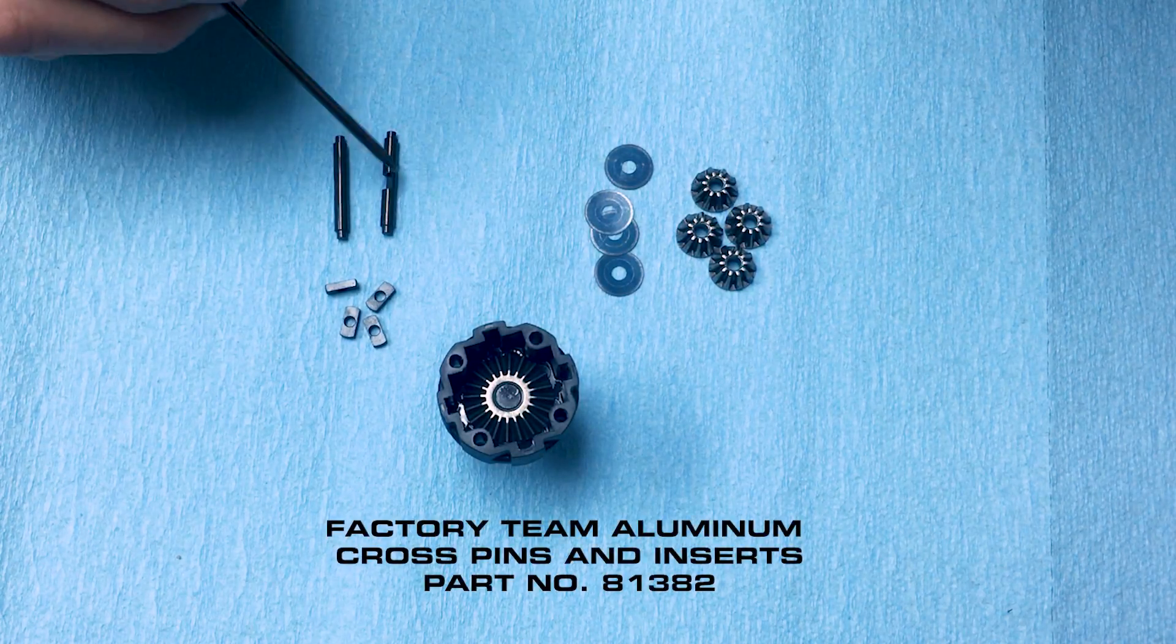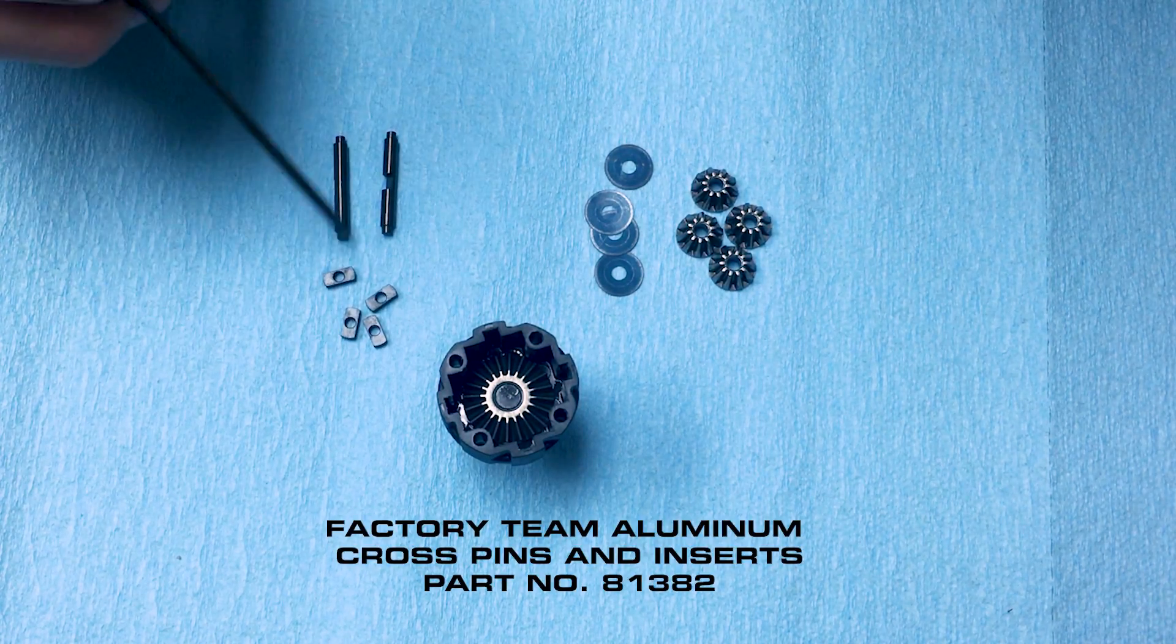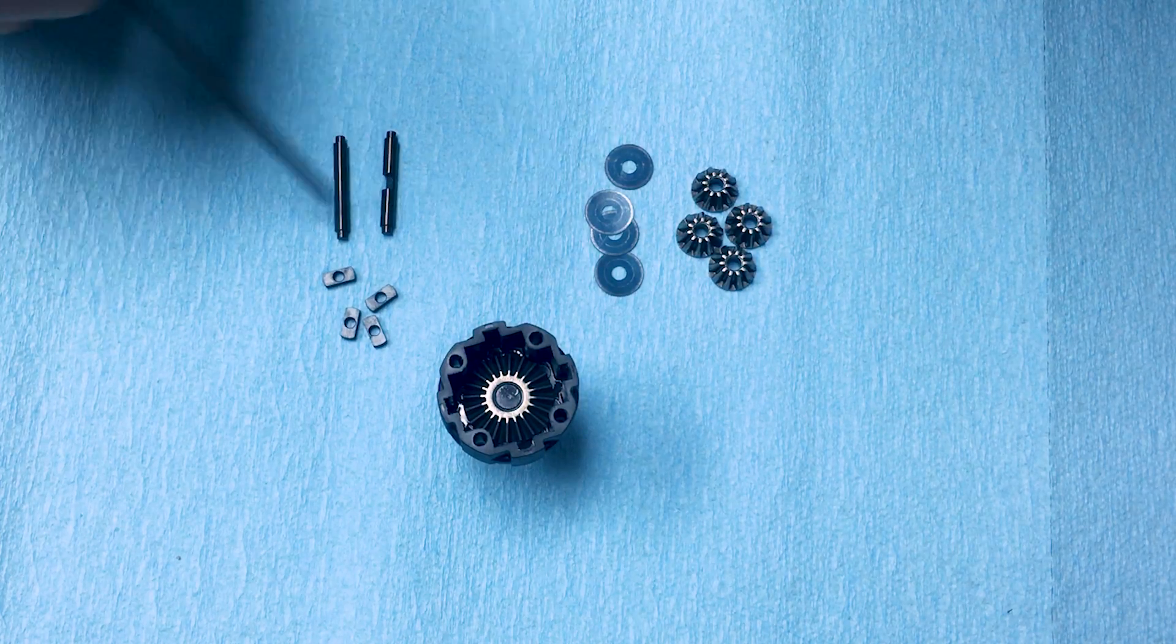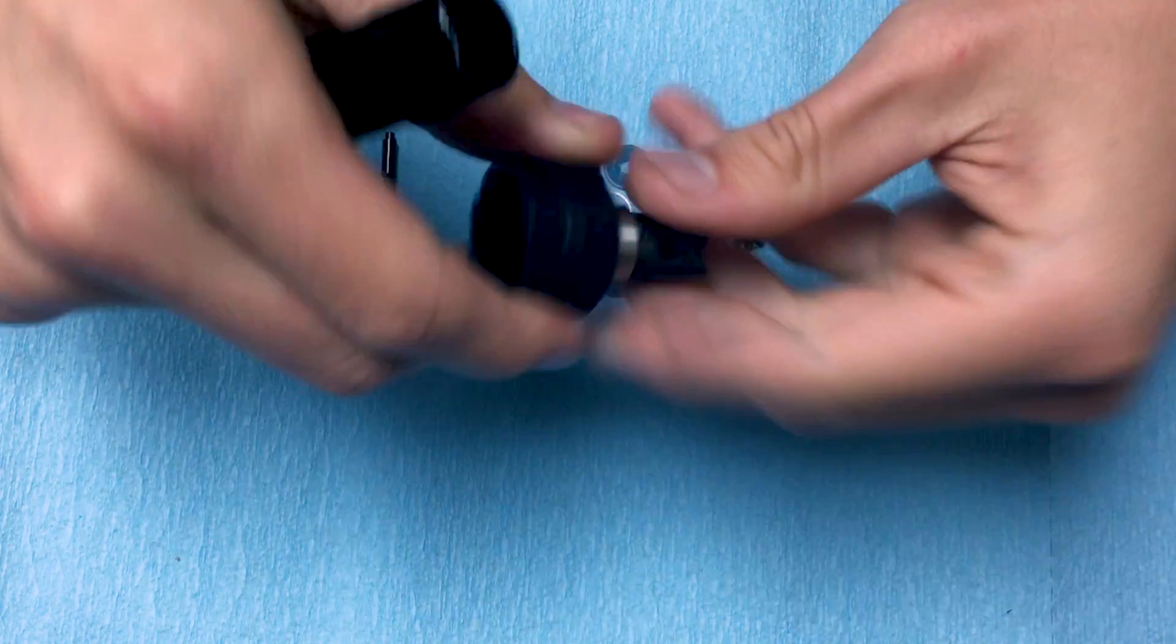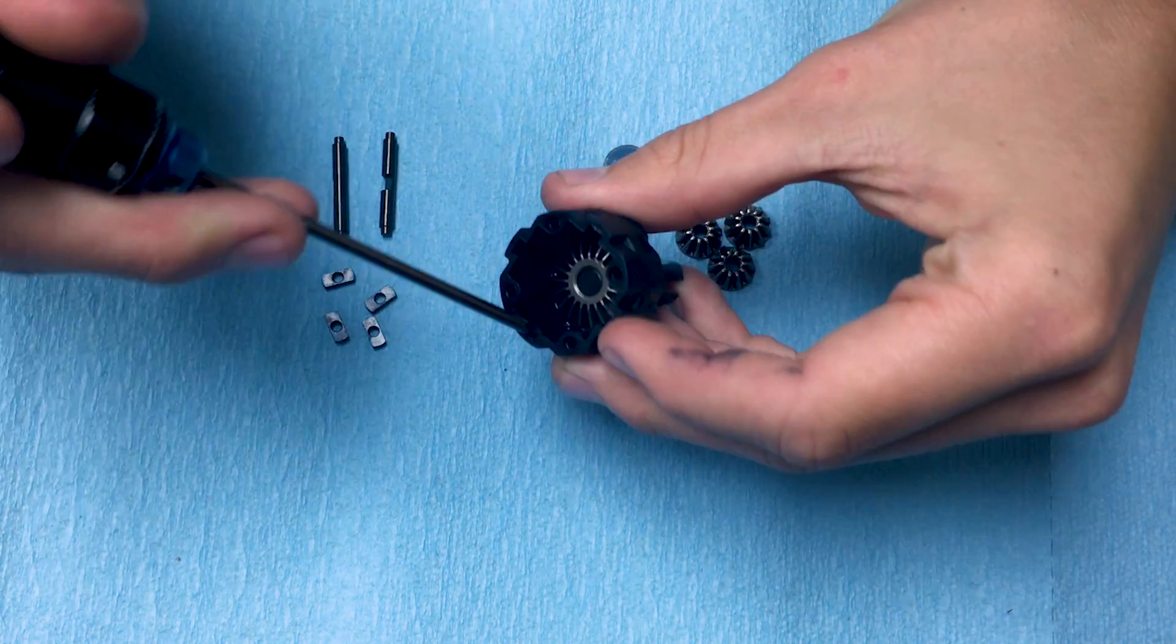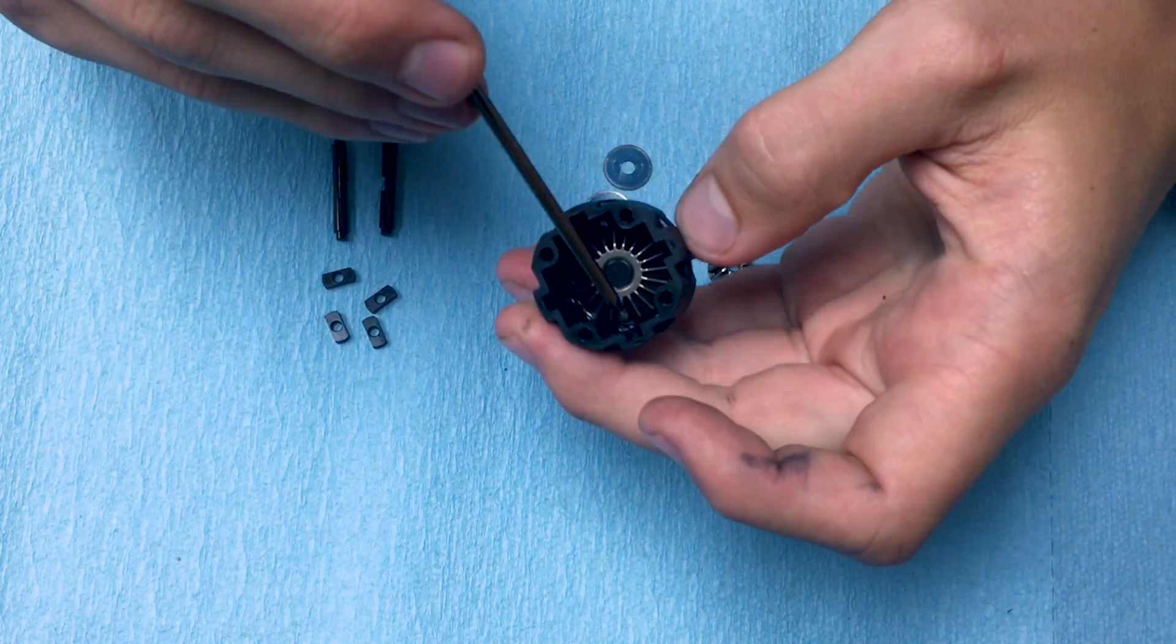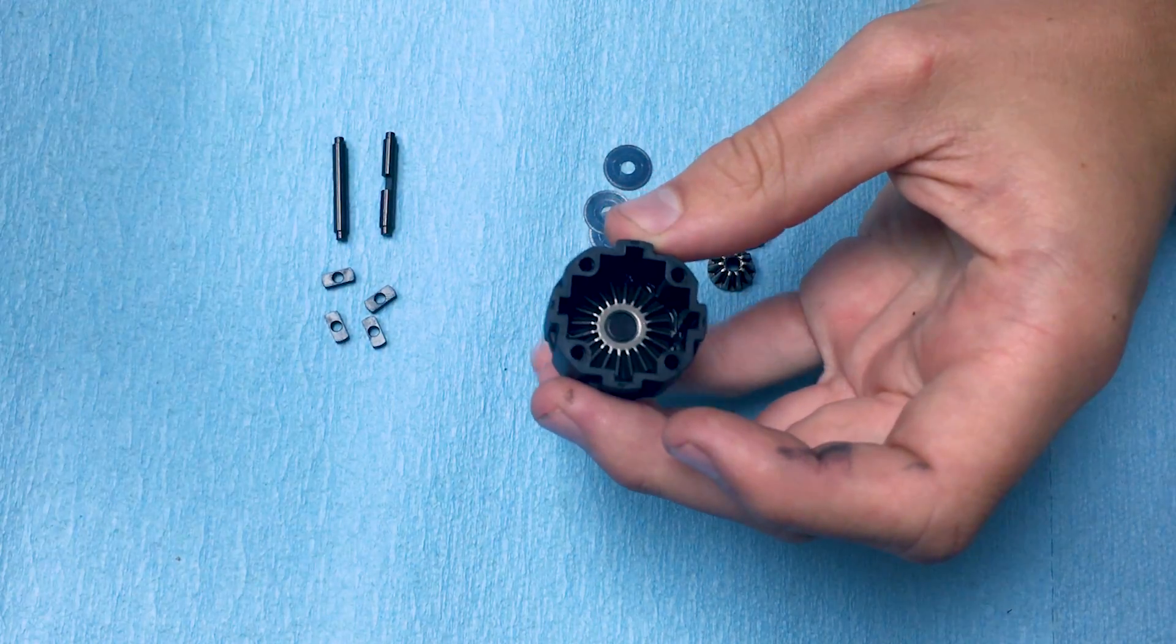Included in the package are two aluminum crosspins and four steel inserts. The reason I'm going to upgrade the steel crosspins that are stock in the V3 diffs are a couple reasons. The lighter crosspins reduce the rotating mass inside the diff as the diff rotates inside the gearbox. The steel inserts line up with the grooves inside the diff case and provide a better contact area for the crosspins so the case doesn't wear out as quickly. This provides a more consistent diff and ultimately a better performing diff.